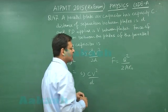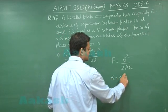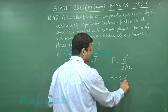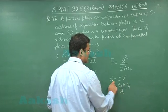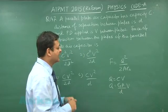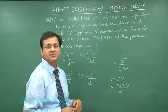You can always say that q equals CV, and for C you can always use ε₀A by d. So you can substitute this value of q here and use the expression that C is equal to ε₀A by d.